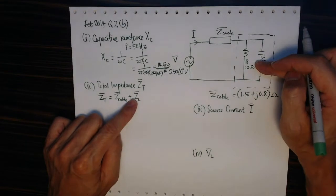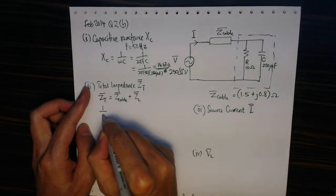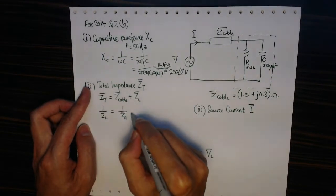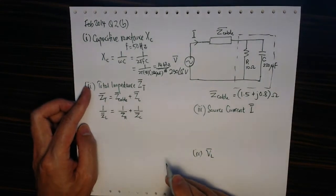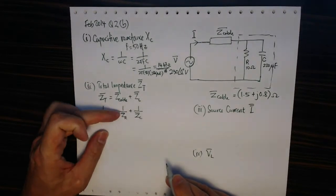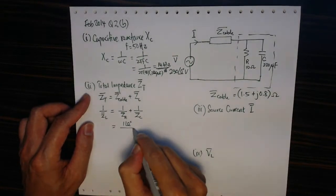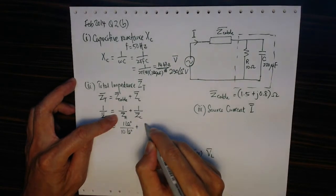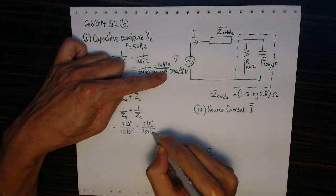The load happens to be comprising of two parallel components, so we need to use the impedance formula for parallel circuits to calculate the load impedance. One upon ZL equals one upon Zr, the impedance of the resistors, plus the impedance of the capacitance. Now this is a good choice for polar version, so we have 1 angle zero divided by R, in this case is 10 angle zero, plus 1 angle zero degrees divided by...